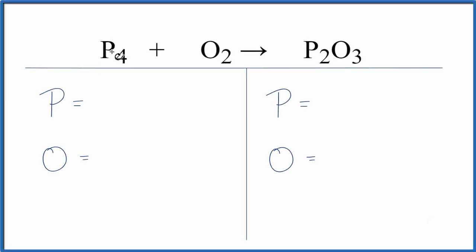In this video we'll balance the equation P4 plus O2 yields P2O3. Let's count the atoms up. We have four phosphorus atoms, two oxygens, two phosphorus on the product side, and then three oxygen.